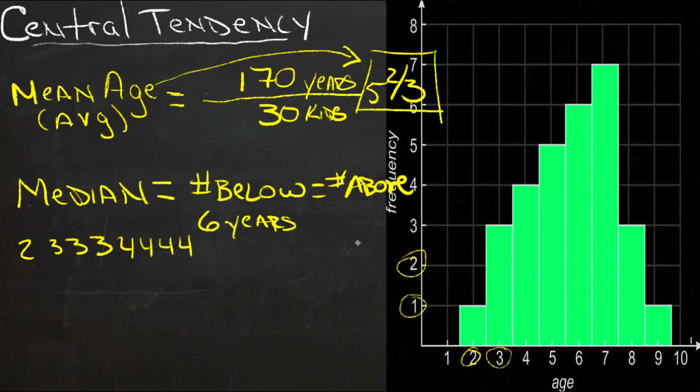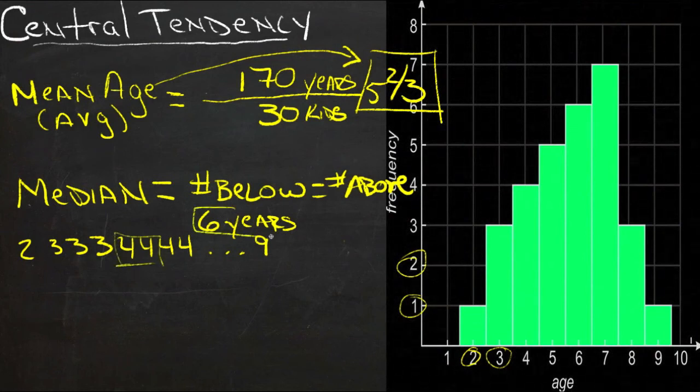all the way up until we got to 9, because there's only one 9 year old, and then counted back, 15 this way and 15 this way, those two in the middle would be 6 years. So our median age is 6 years.